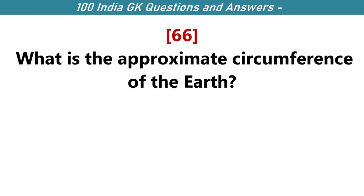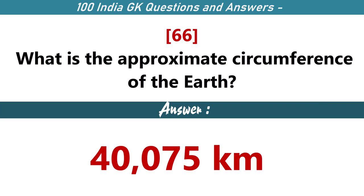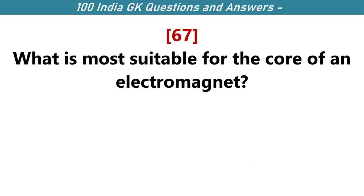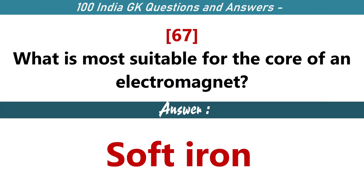What is the approximate circumference of the Earth? 40,075 km. What is the most suitable material for the core of an electromagnet? Soft iron.